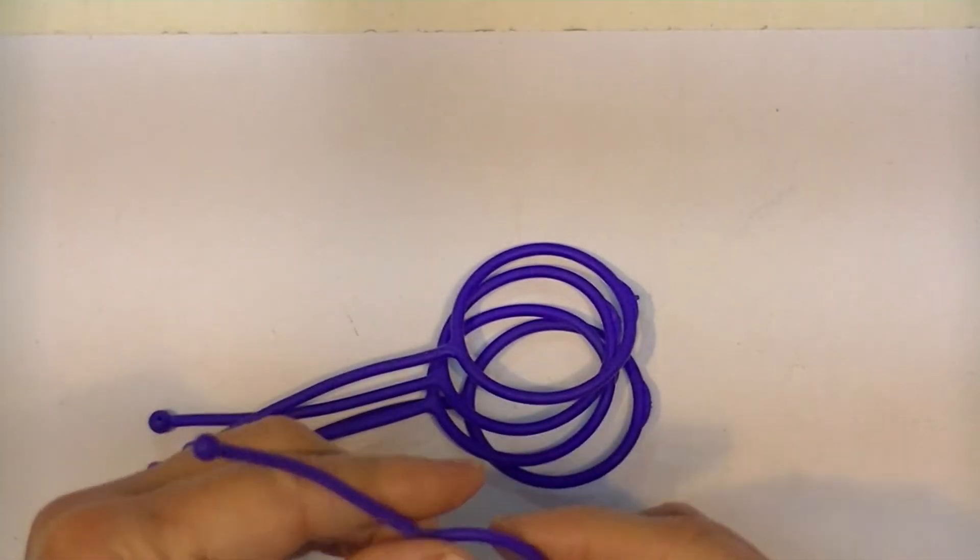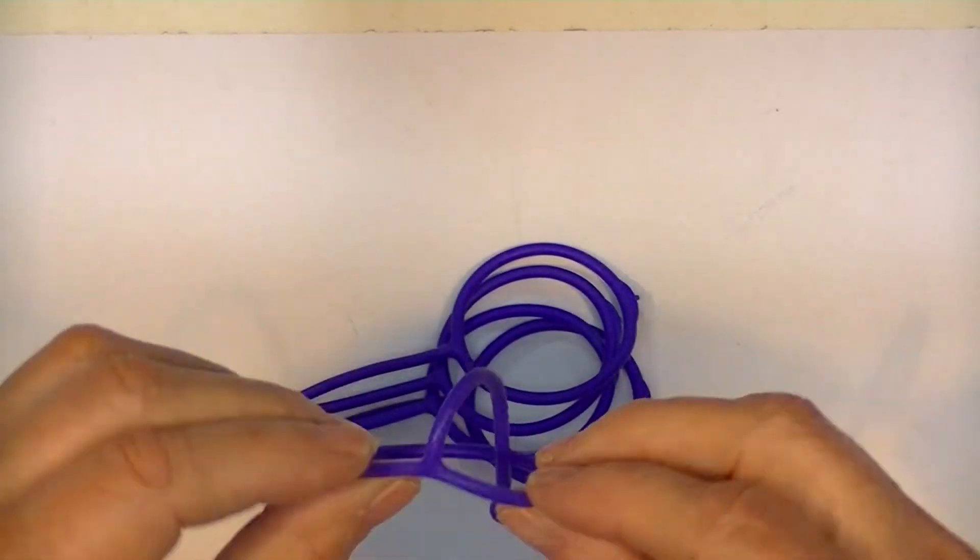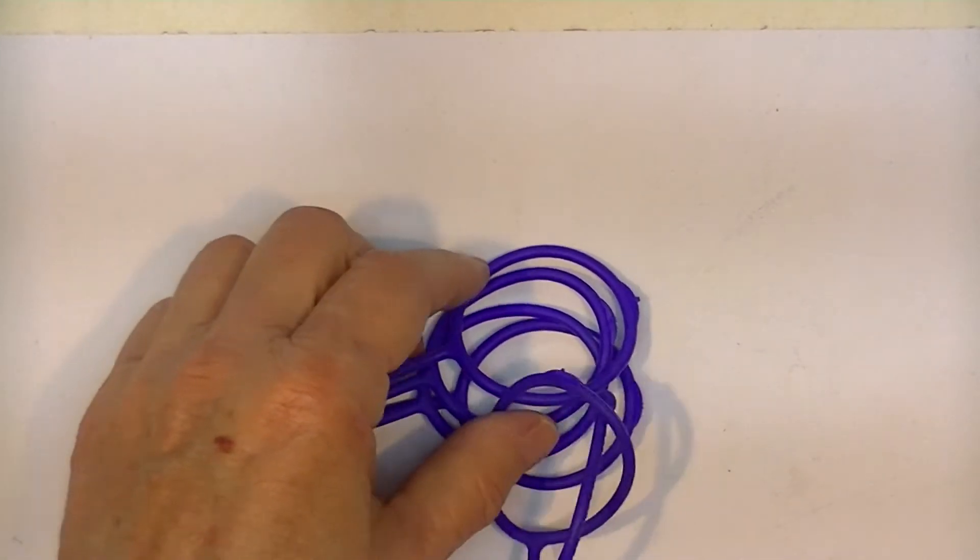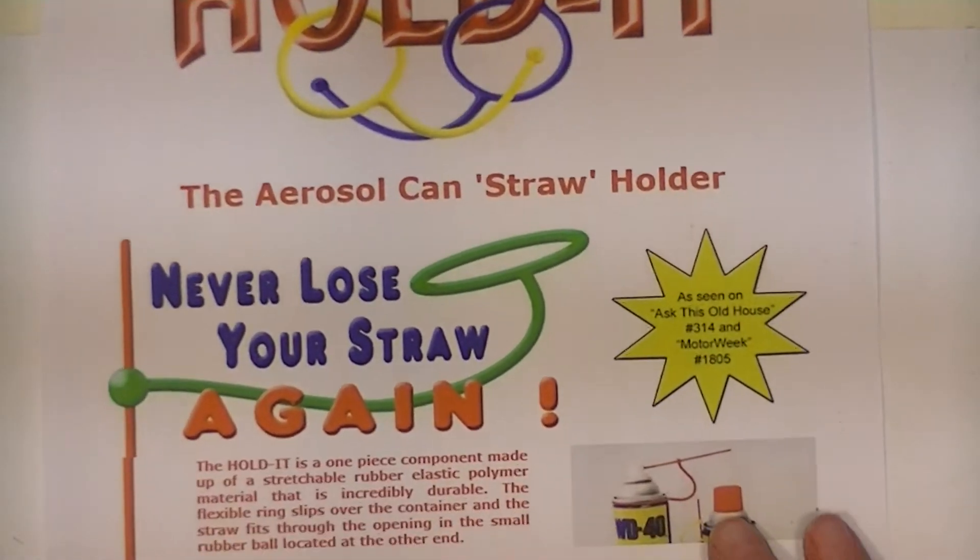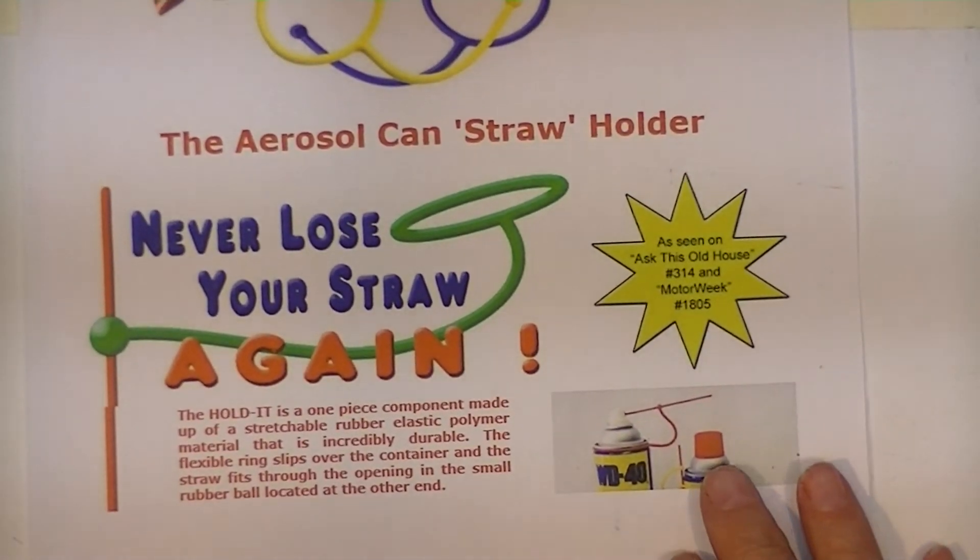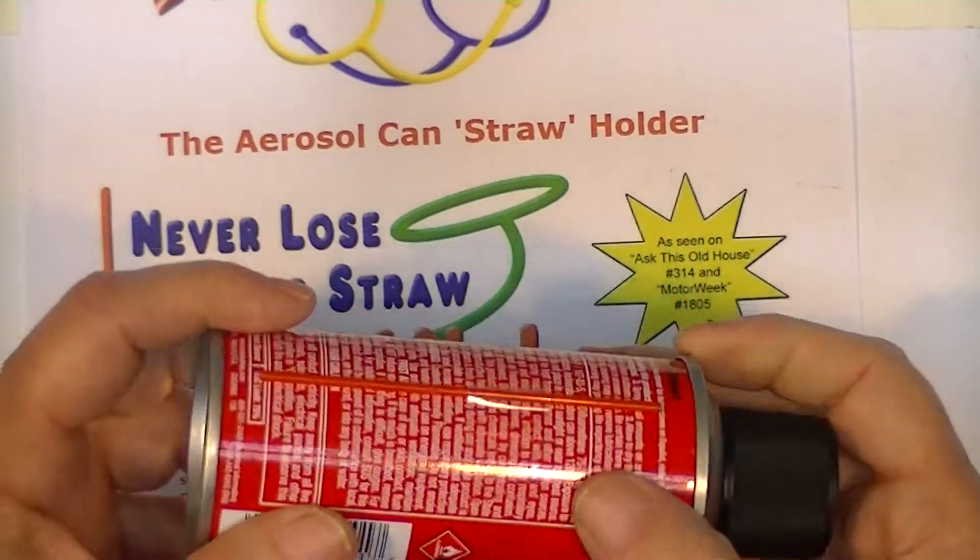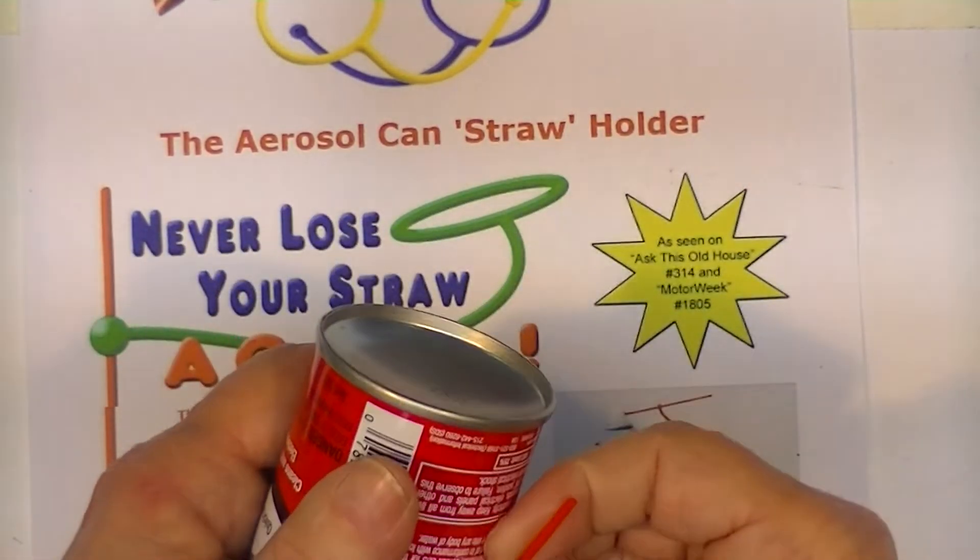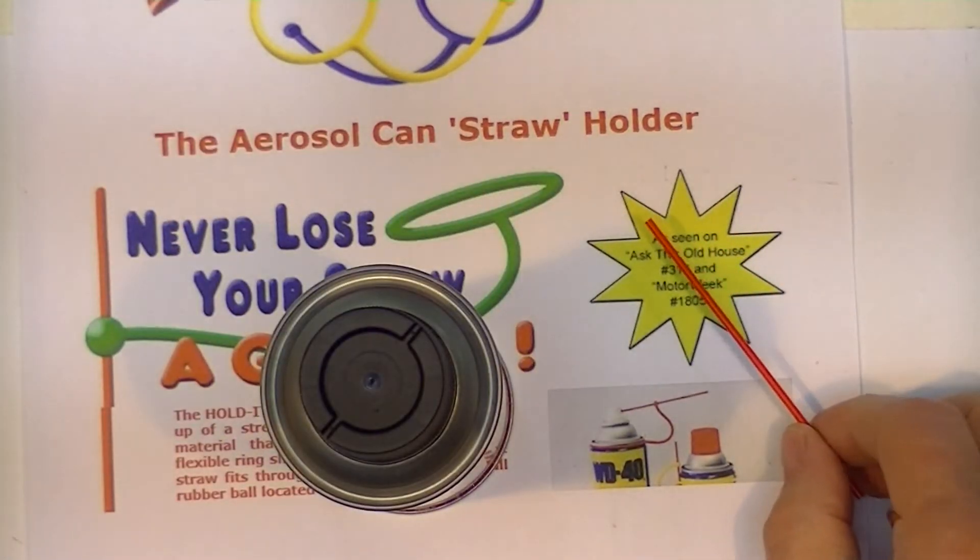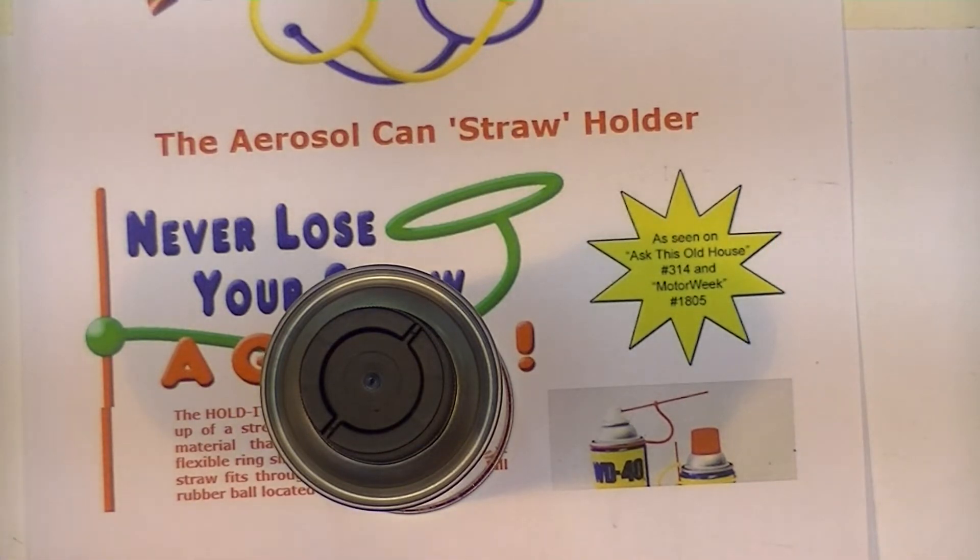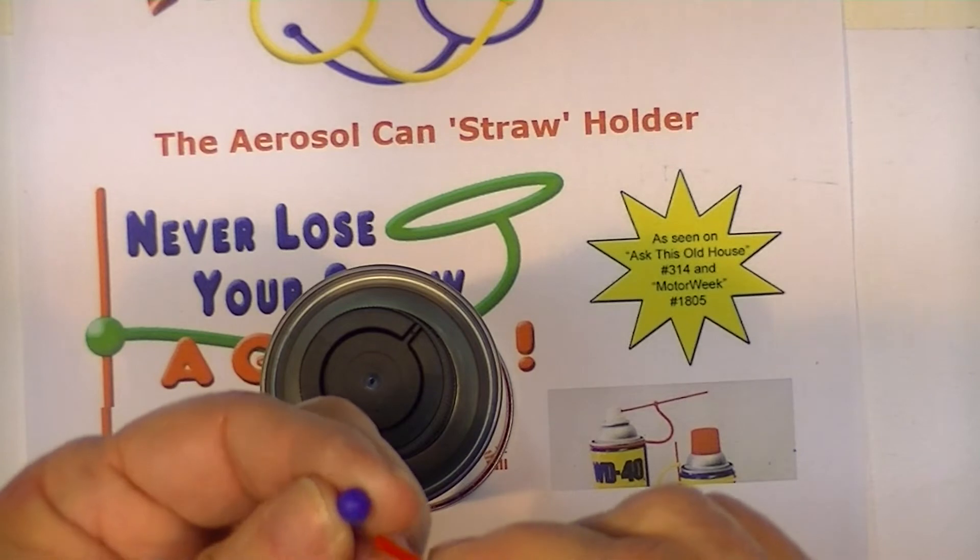Alright, for those viewers with a dirty mind, these things are actually a holder for the straw that you get on your carburetor cleaner. This is electronic cleaner.